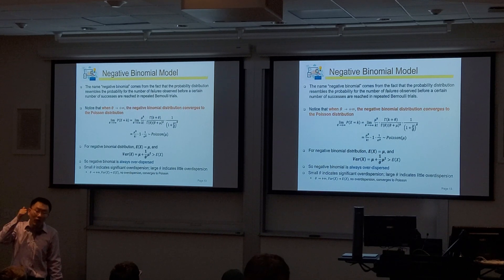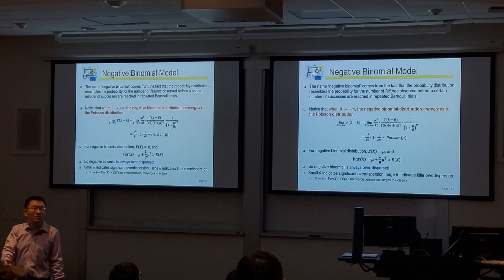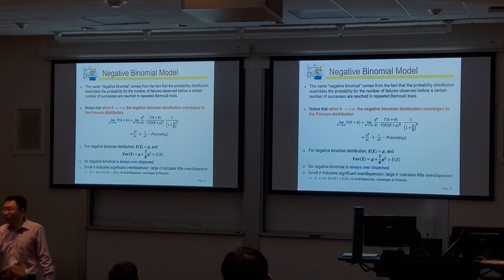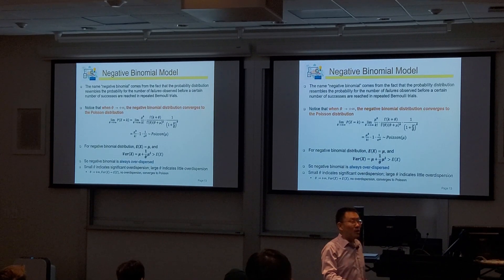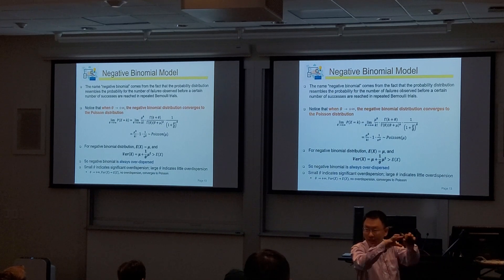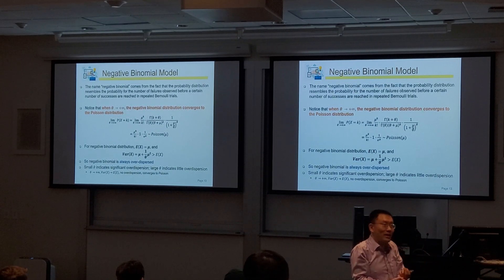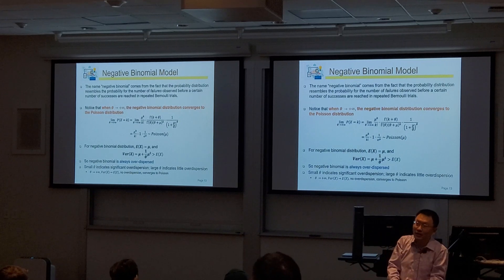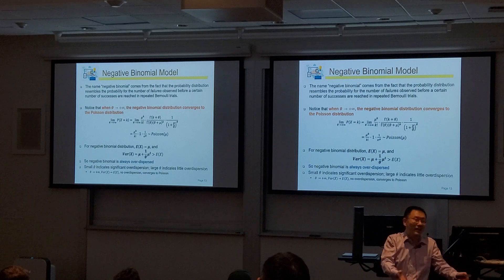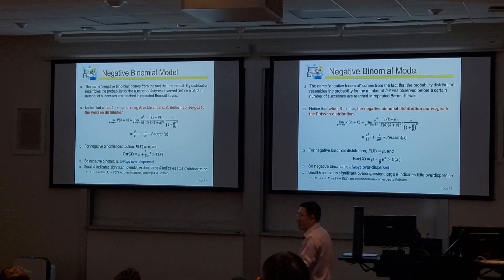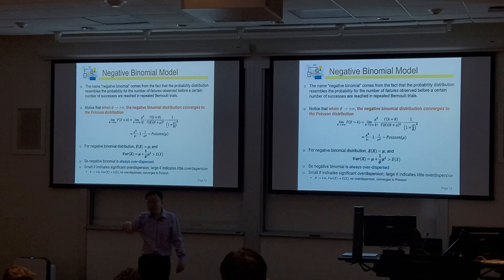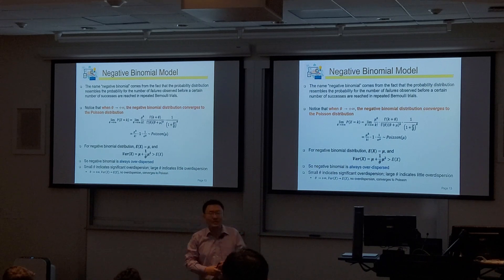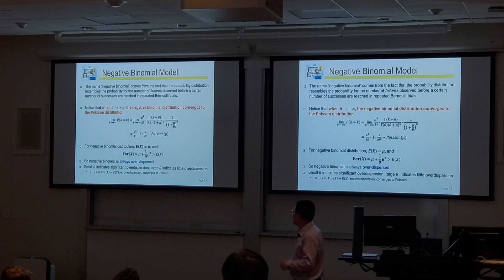Can the negative binomial account for under-dispersion? No. By design, we are adding additional variance into the y value setup, so there is no way to derive a variance smaller than the expected value from a negative binomial model. Under-dispersion is less common, so we worry more about over-dispersion, which is what this model is designed to handle.